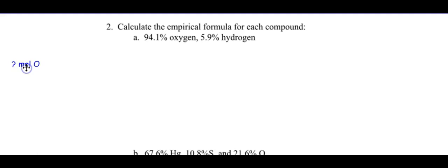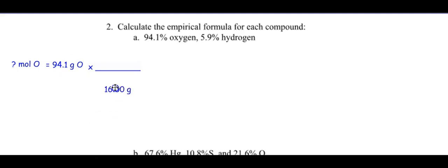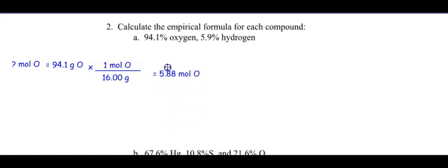Let's practice another one. This compound contains oxygen and hydrogen — it might be water, who knows. First step: percent to grams. If I assume 100 grams, then 94.1% oxygen gives me 94.1 grams of oxygen. Now grams to moles — factor label with oxygen's molar mass of 16 grams per mole on the bottom and one mole on top. That gives 5.88 moles of oxygen.